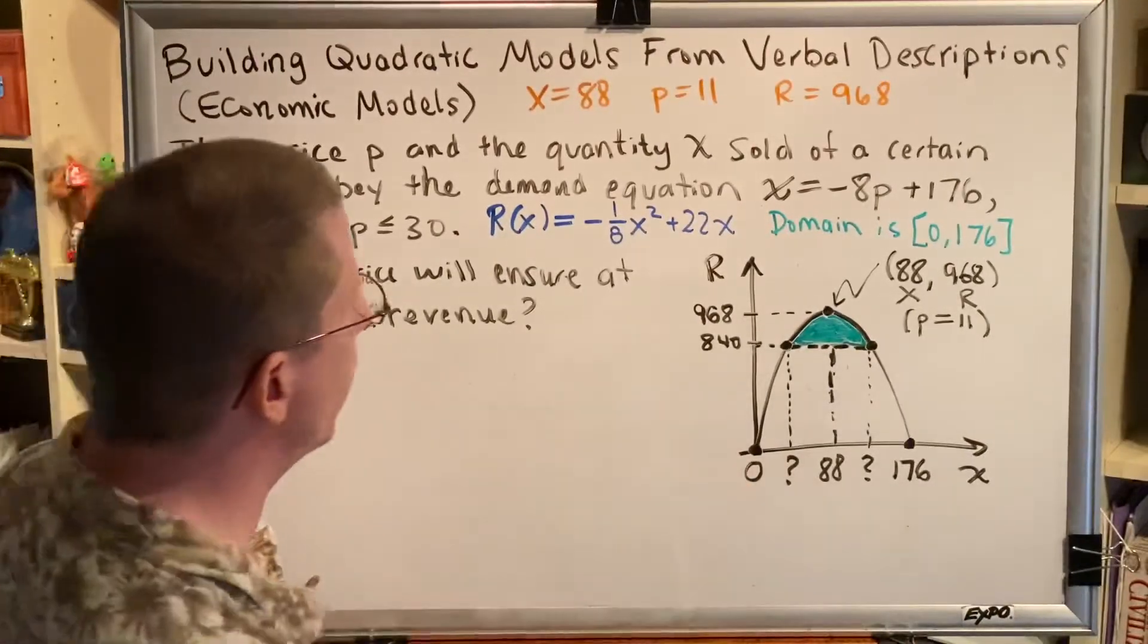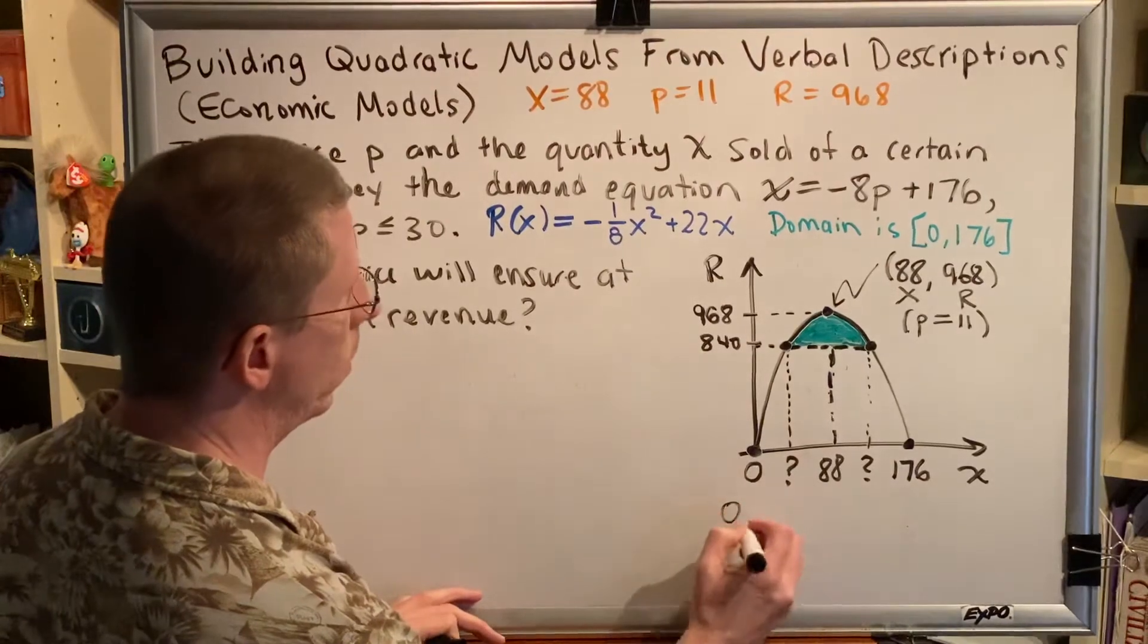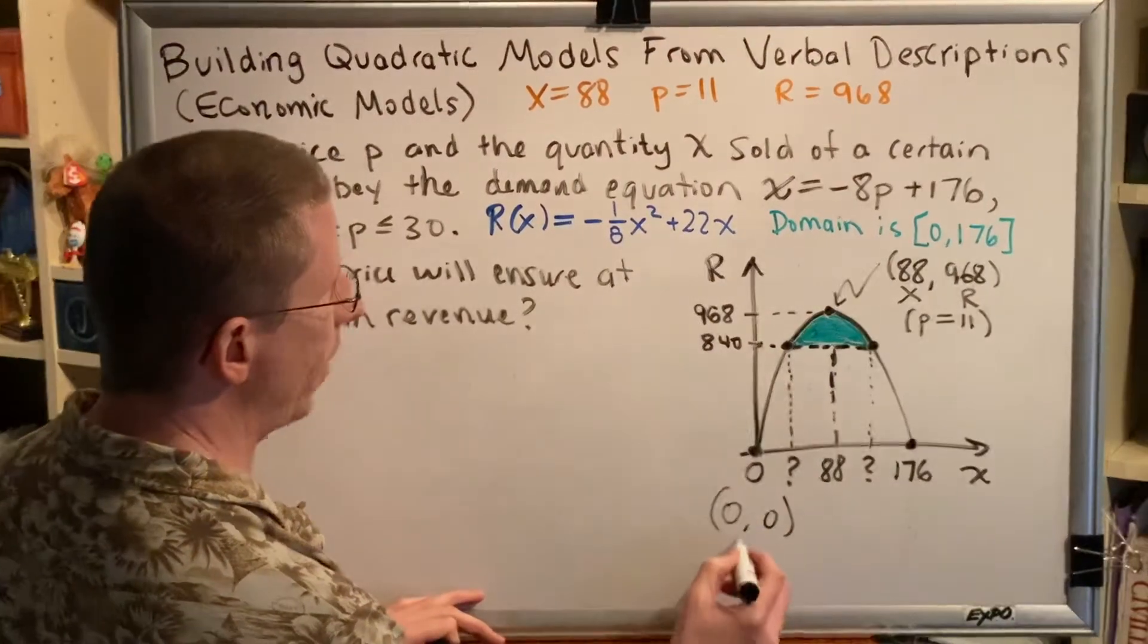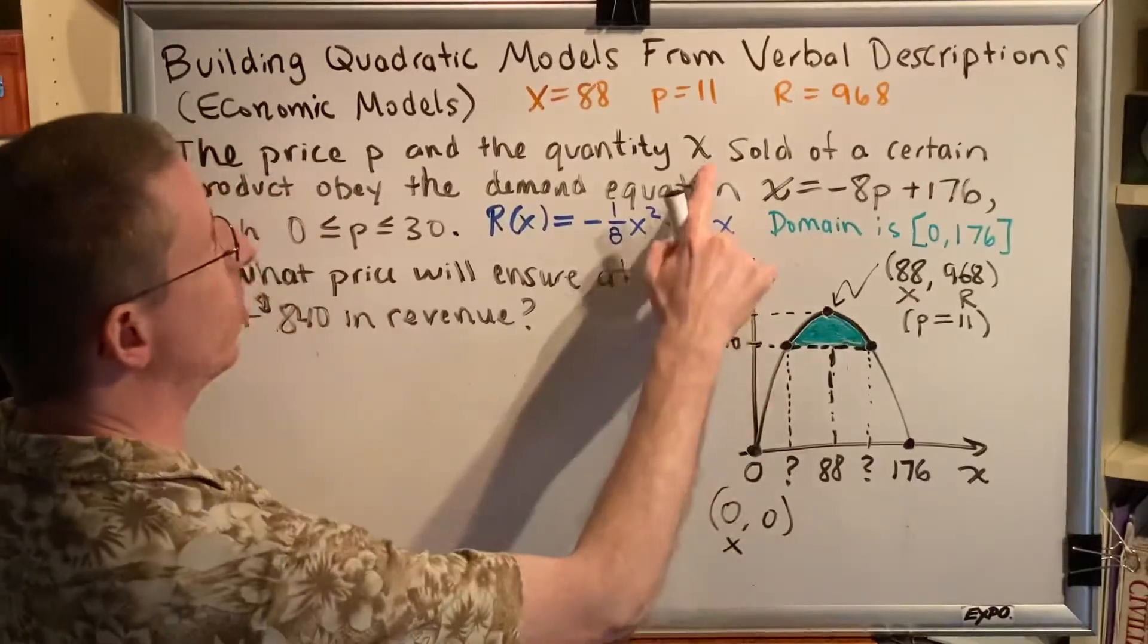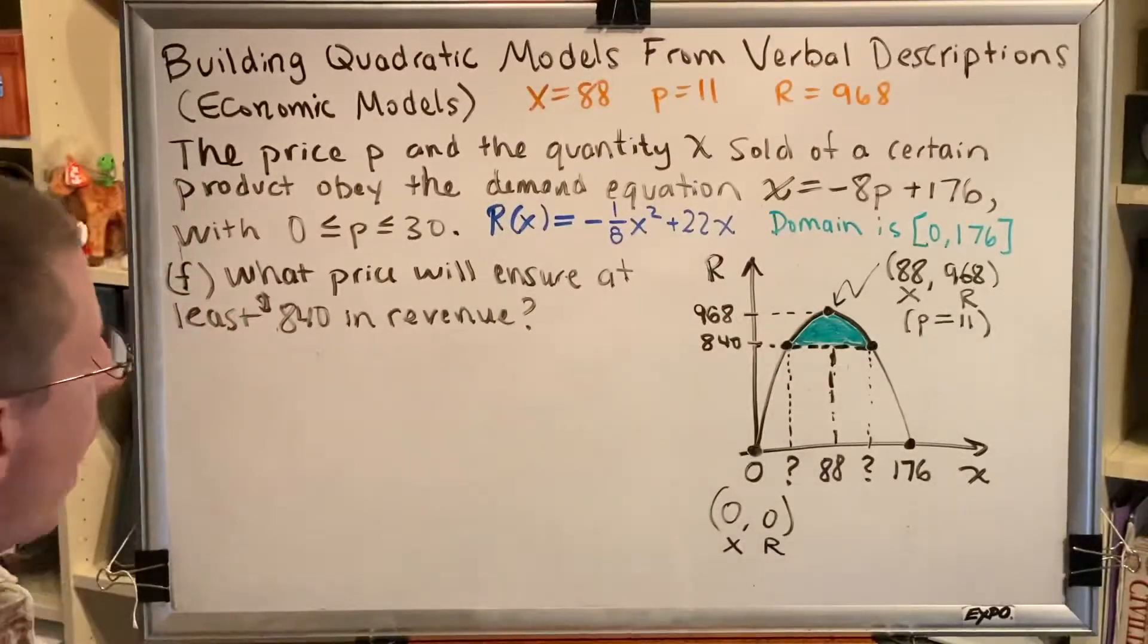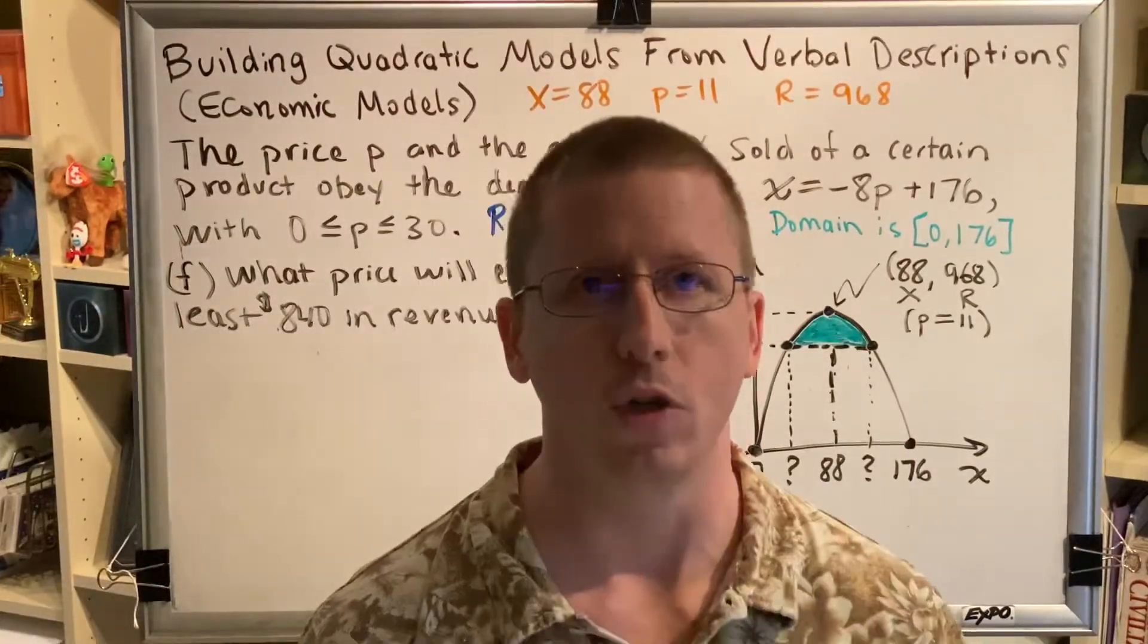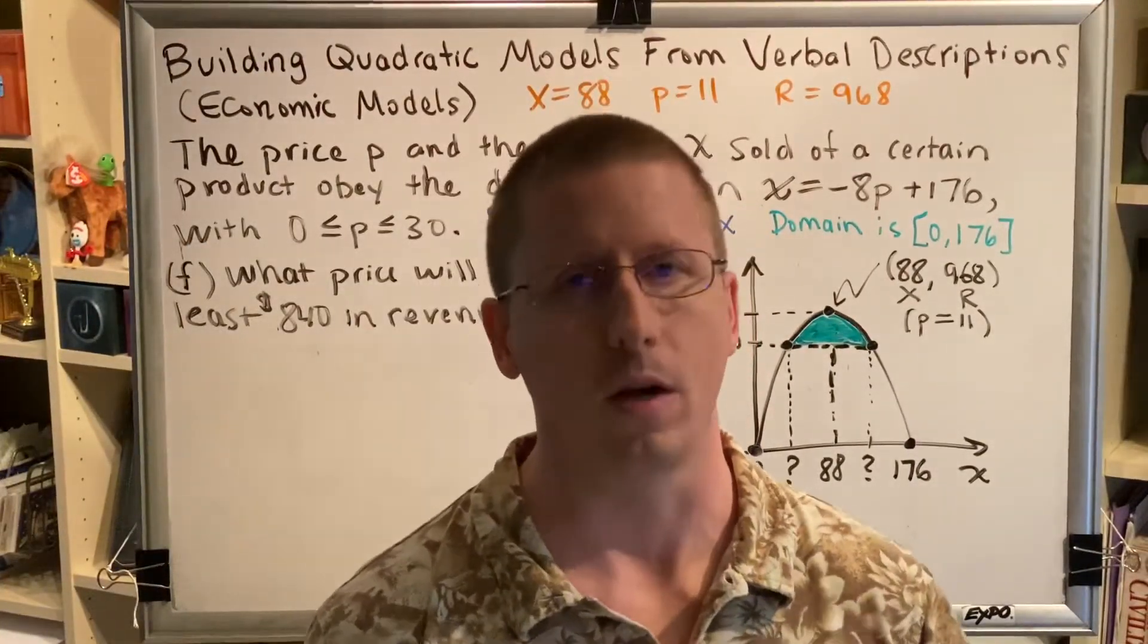I know that it's downward opening because of the negative 1/8 here, and what this represents is the relationship between quantity sold and revenue. Let's talk about this diagram a little bit. Let's talk first about this data point right here, sitting at the origin, (0,0). When you sell zero items, you bring in zero money.